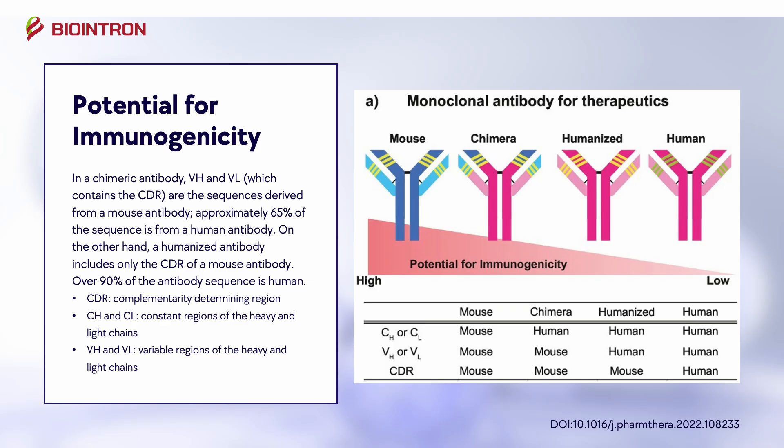In a chimeric antibody, VH and VL, which contains the CDR, are the sequences derived from a mouse antibody, and approximately 65% of the sequence is from a human antibody. On the other hand, a humanized antibody includes only the CDR of a mouse antibody, and over 90% of the antibody sequence is human.